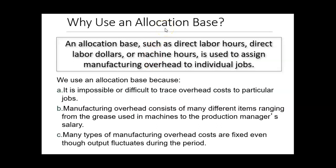We use what's called an allocation base to assign overhead costs. The allocation base may be direct labor hours, direct labor dollars, or machine hours. The reason we use an allocation base is that it is often impossible to trace overhead costs to a particular job. For example, if a manufacturing plant has a security guard, we have no way of knowing how much of that person's salary should be assigned to each individual job.